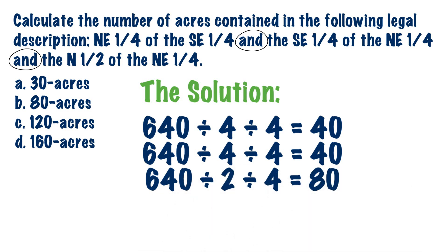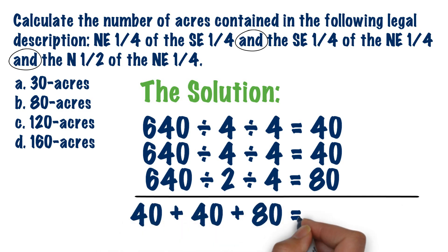We then have to add it all up, so we take 40 plus 40 plus 80 to get 160 acres. The answer, it's 160 acres. Just remember, whenever you see an and, then you calculate the acres separately for each side of the and, and then add it together to get your final answer.